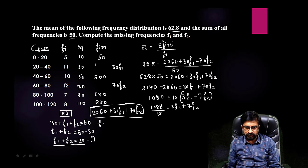And keep that value inside this. Let me write down, 108 is equals to 3, and instead of f1 I am going to write 20 minus f2 plus 7 f2. So 108 is equals to 3 into 20 is 60, minus 3 f2 plus 7 f2.